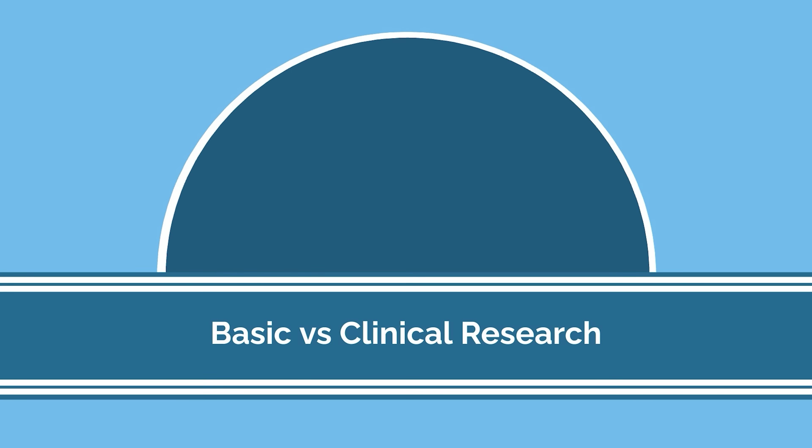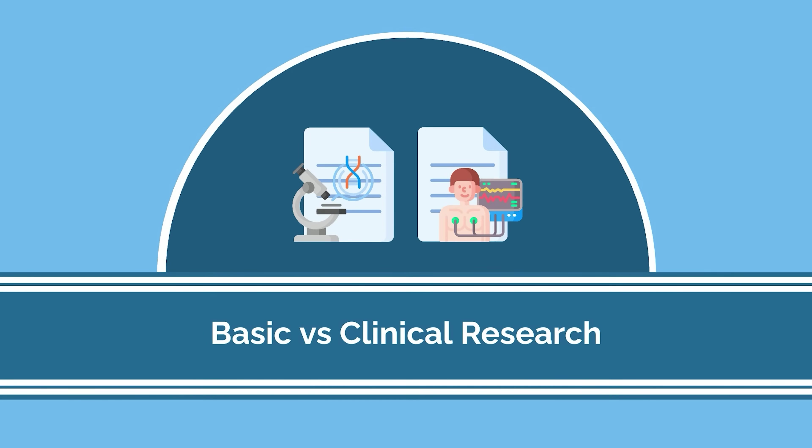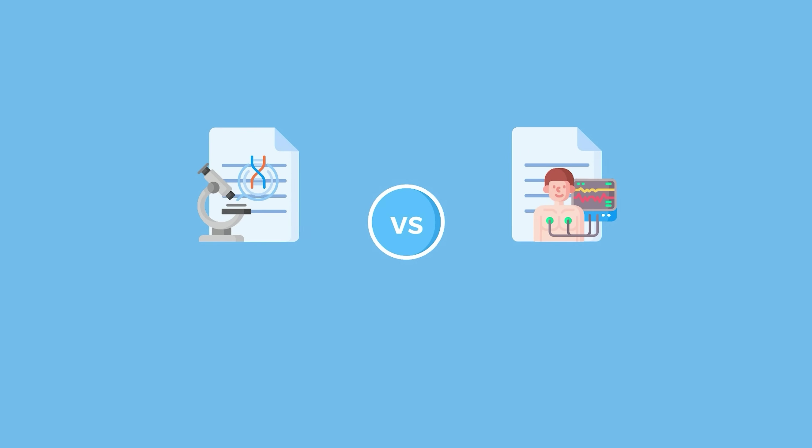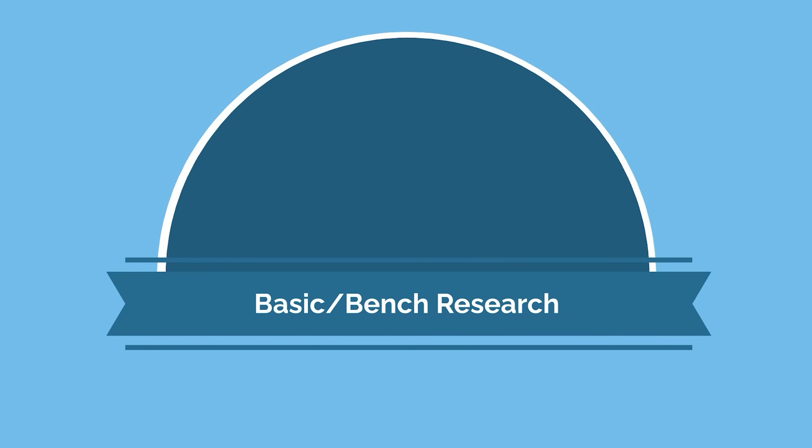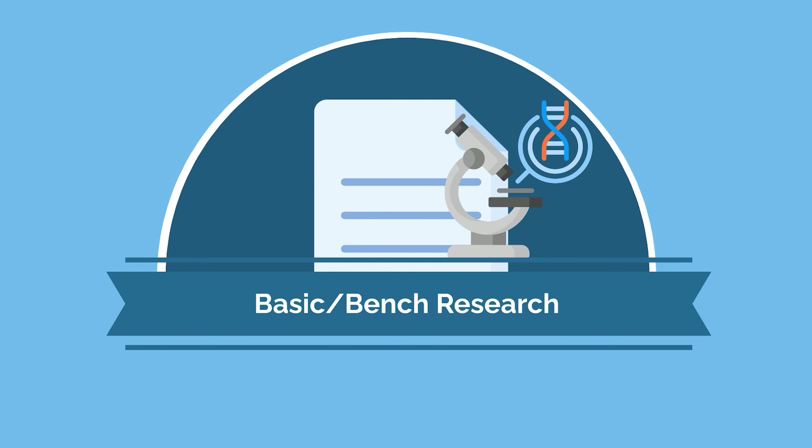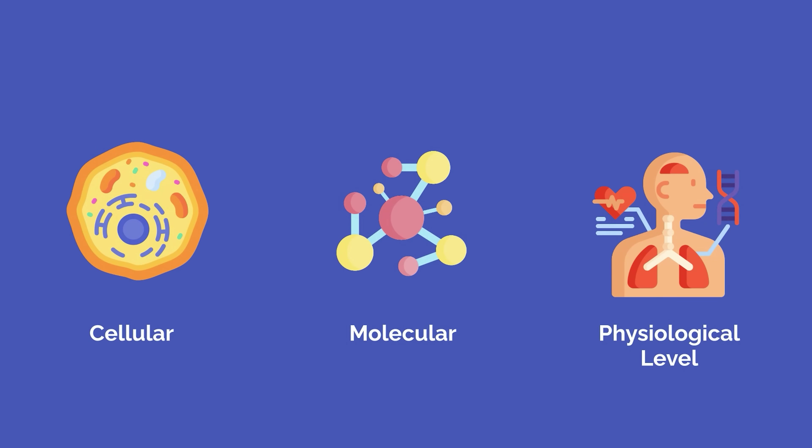First, let's cover what types of research you can pursue. There are two main types of research. Knowing the difference and your preference will help you find the position that's right for you. Basic, or bench research, is performed in a laboratory and evaluates scientific questions from a cellular, molecular,